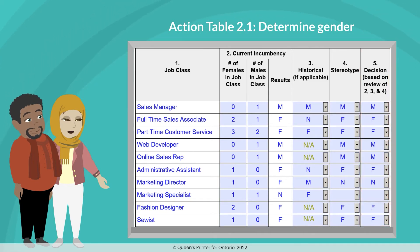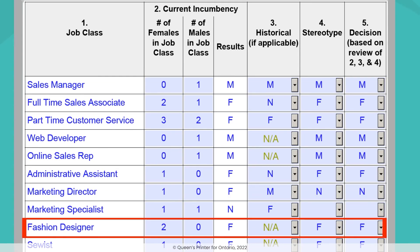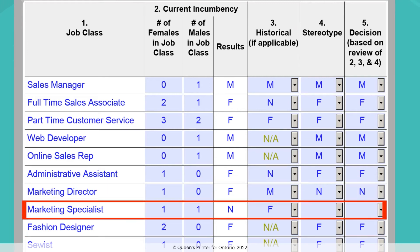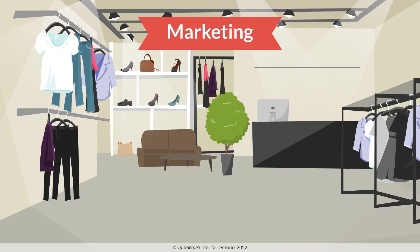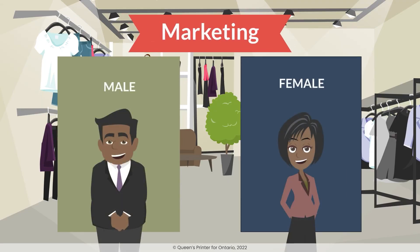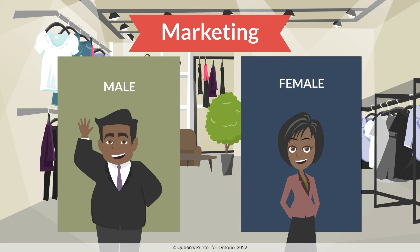If we see that there is clearly an equal number of males and females in a job class, then it is gender-neutral. I can see that fashion designer is clearly a female job class because all the columns are female. But I can't decide what the marketing specialist job class would be. Well, right now we have Aaliyah and Ranji in marketing, but we have had more women in that position in the past, so it seems to be leaning more towards female. But I think the gender stereotype for marketing might be male, so it could be neutral.